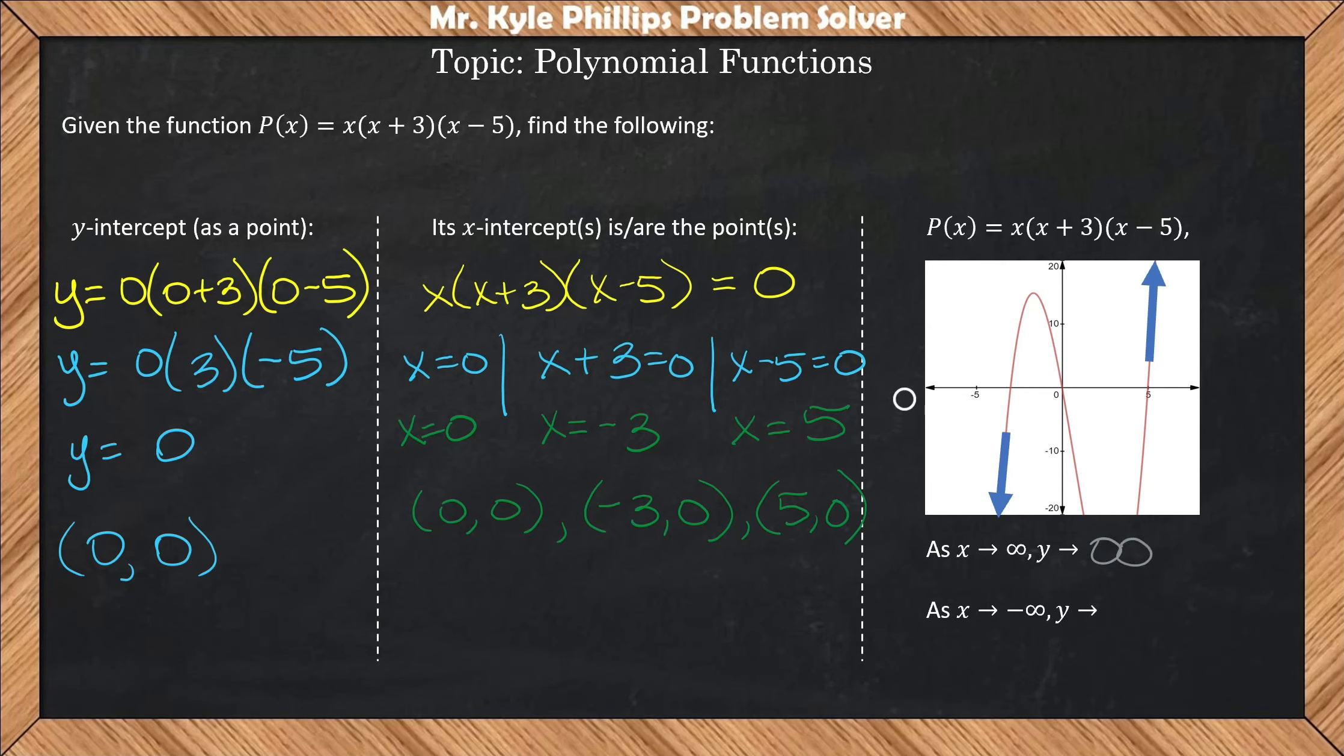And then when I look to the left over here, my y values are going down. So, as I look to the left, as x approaches negative infinity, y is approaching negative infinity.